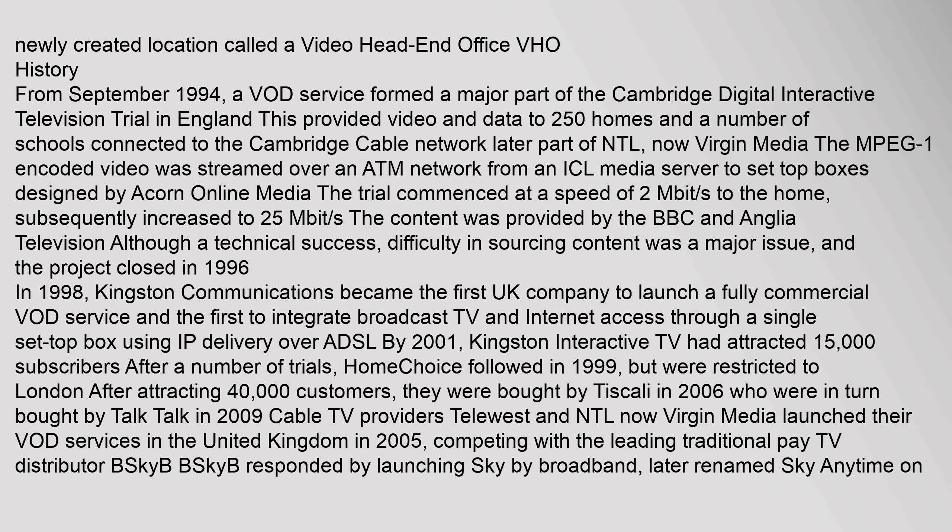From September 1994, a VOD service formed a major part of the Cambridge Digital Interactive Television Trial in England. This provided video and data to 250 homes and a number of schools connected to the Cambridge cable network, later part of NTL, now Virgin Media. The MPEG-1 encoded video was streamed over an ATM network from an ICL media server to set-top boxes designed by Acorn Online Media. The trial commenced at a speed of 2 Mbps to the home, subsequently increased to 25 Mbps. Content was provided by the BBC and Anglia Television. Although a technical success, difficulty in sourcing content was a major issue, and the project closed in 1996.